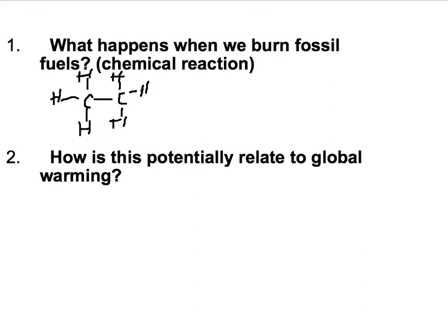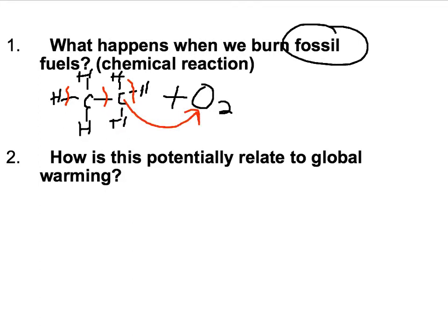When you take a hydrocarbon — and fossil fuels are hydrocarbons — and you react them with oxygen, what happens is these bonds will break. The carbon will attach to an oxygen, and the hydrogens will also react with the oxygen. What we get out of that is heat — that's what causes an explosion when you catch gas on fire, or burn it in the piston of your car. You get heat out when you break those chemical bonds, and the atoms will rearrange themselves.